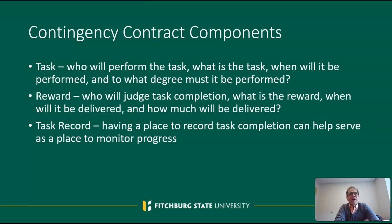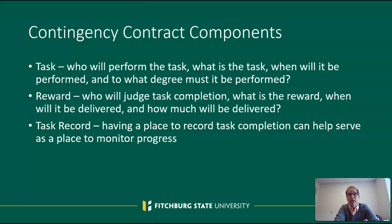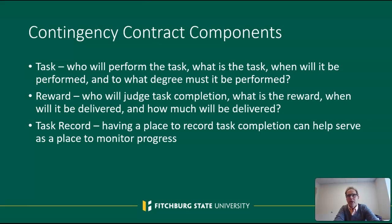A contingency contract's components can include the task: who will perform it, what that task is, when it will be performed, and to what degree it must be performed. It will also include information about the reward to be delivered — who will judge whether the task was completed, what the actual reward is, when it will be delivered, and how much. It also includes a task record for marking instances of completion and monitoring progress.